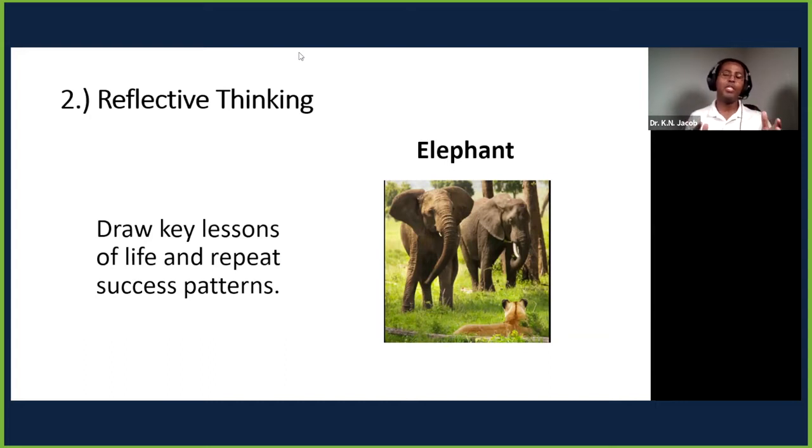Reflective thinkers draw key lessons of life and repeat success patterns. They avoid repeating their mistakes but repeat success patterns. Elephants remember the water holes and the same path. Any confrontational path with lions, they avoid it. They don't want to foolishly risk the calves to predators.